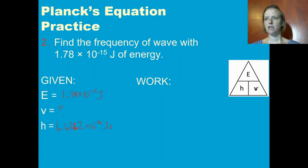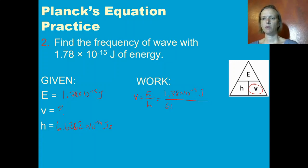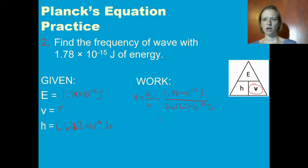This time I'm calculating nu. I'm going to do energy divided by Planck's constant. So: 1.78 times 10 to the negative 15 joules over 6.6262 times 10 to the negative 34 joule seconds.